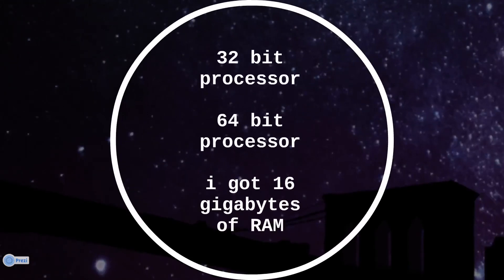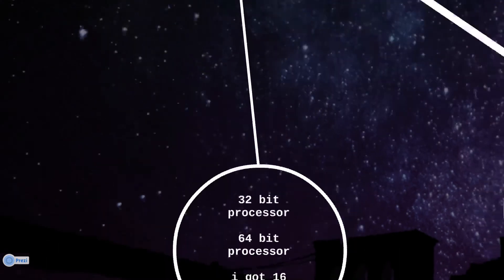Now you might have heard people talking about 32-bit processors or 64-bit processors, or 16 gigabytes of RAM. All these are based on binary.